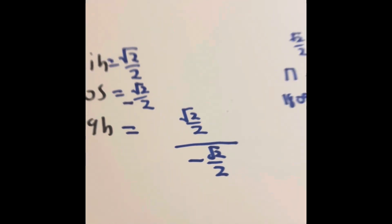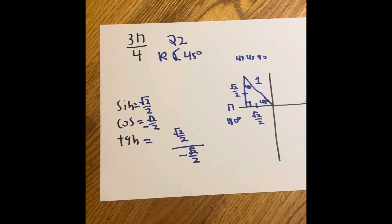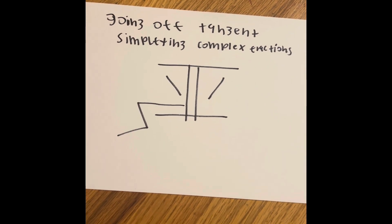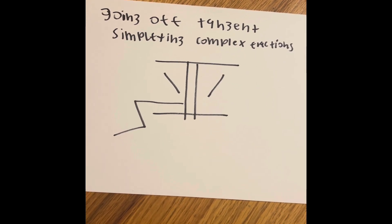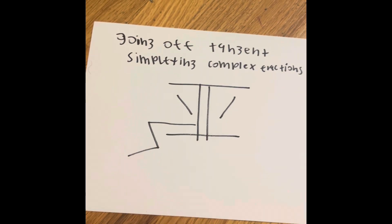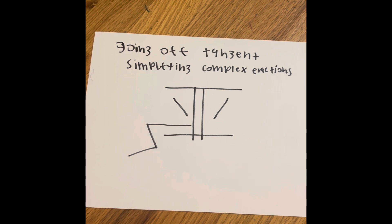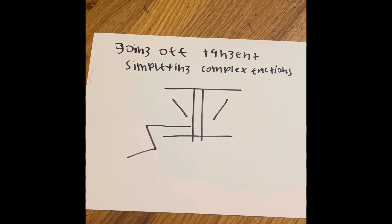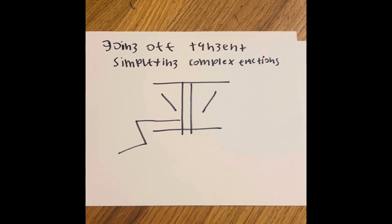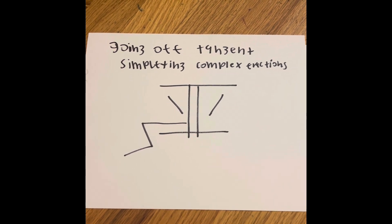So what we got to do is somehow simplify that. The reason why we're literally going off-tangent is because many kids in our pre-cal class never learned how to simplify complex fractions. Even though it may seem complex, it's actually easier than you think.